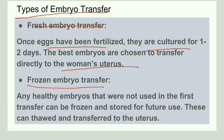Next is the frozen embryo transfer. If more than one best embryo is obtained, the extra embryos are frozen. These frozen embryos are later thawed and transferred to the uterus when needed. The difference between fresh and frozen is that fresh embryos are transferred immediately after the fertilization and culture period, whereas frozen embryos are cryopreserved and thawed when required.